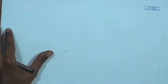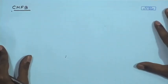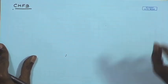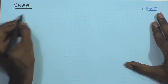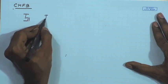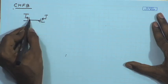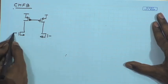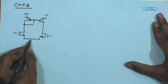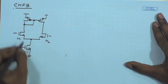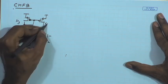That technique is called common mode feedback, where we take advantage of the differential amplifier with current mirror load, which has a well-defined DC bias point. Let us revisit the differential amplifier with current mirror load in order to use it as a common mode feedback unit.